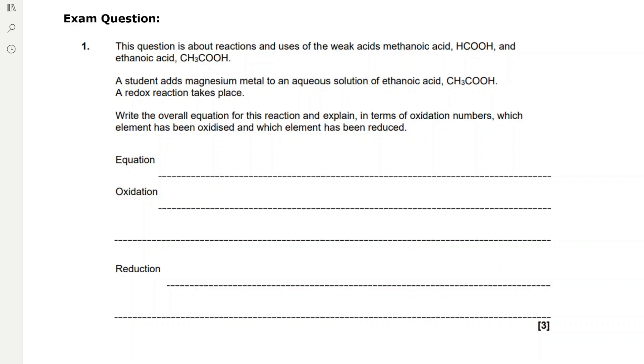Okay, so we've got an exam question. This question is about reactions and uses of weak acids, methanoic acid and ethanoic acid. A student adds magnesium metal to an aqueous solution of ethanoic acid, CH3COOH. A redox reaction takes place.